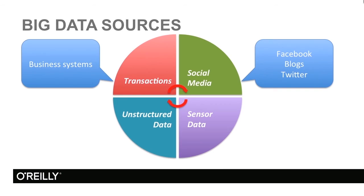One of the big changes in this space are the social media. We have Facebook and blogs and Twitter, and the users are generating tremendous amounts of data. This data, as you will see later, cannot be really successfully stored in relational systems. And this area was actually very important when it comes to the introduction of new data stores which can handle this amount of data.